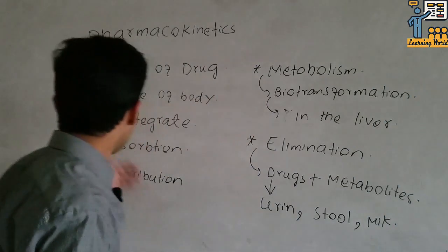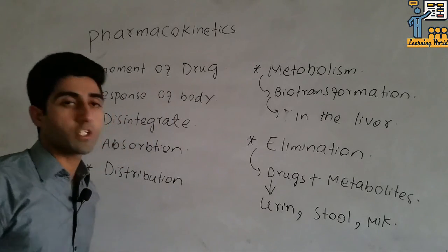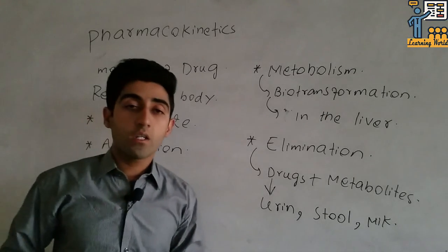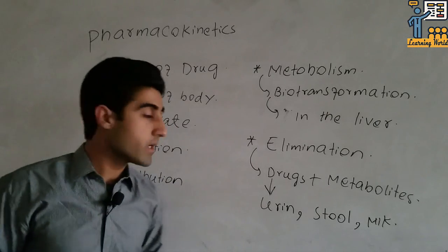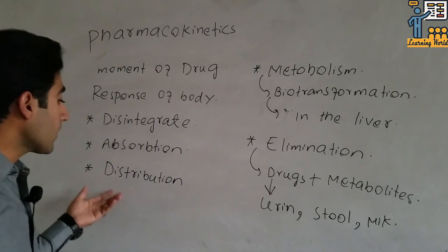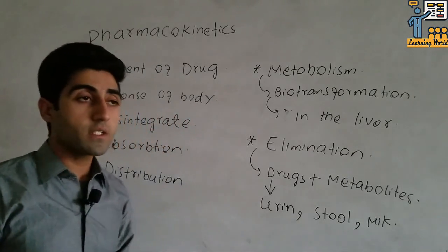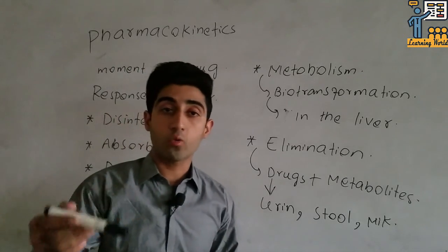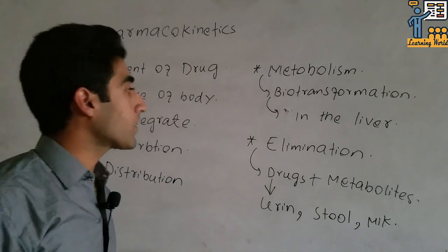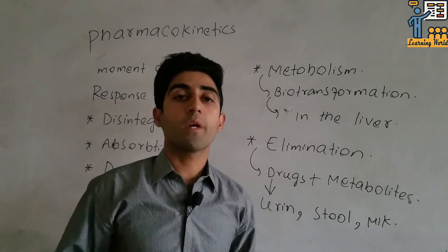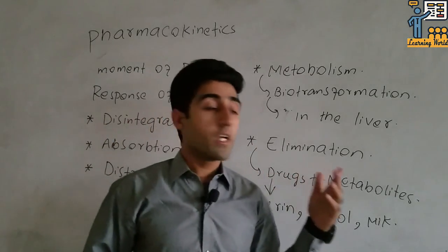To summarize: first, the drug is disintegrated in the stomach. After disintegration, the drug is absorbed from the small intestine. Then in the distribution process, the drug leaves the bloodstream and enters the different parts of the body. In metabolism, the drug reaches the liver and undergoes biotransformation.